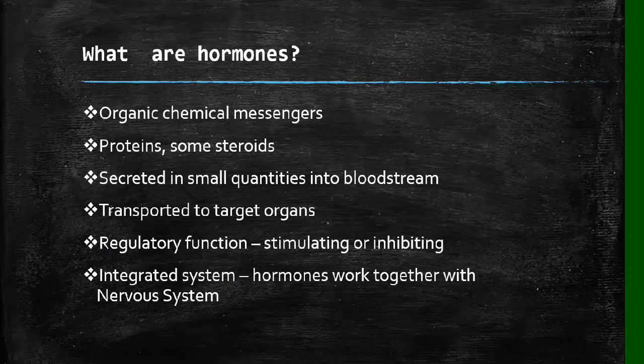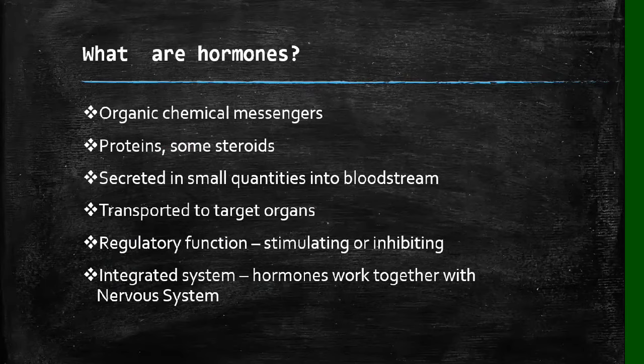The endocrine system, which consists of hormones, works together with the nervous system. What happens is that your brain detects changes in your body, and once it detects those changes, it tells particular glands to secrete certain hormones, which then regulate parts of the body in order to inhibit or stimulate something.